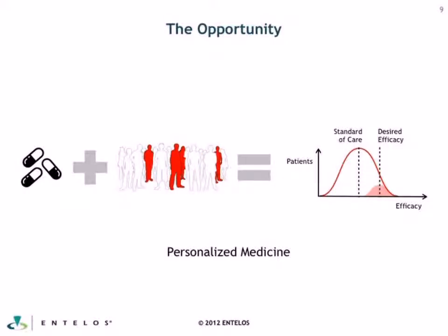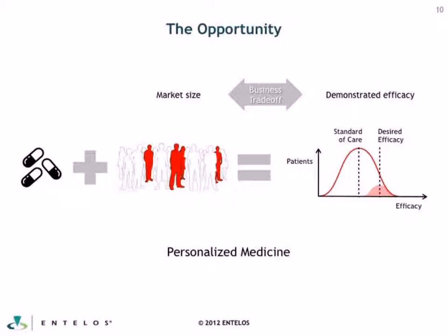Now, clearly, as you look at biasing your trial toward responder subpopulations, there is a business tradeoff between market size and demonstrated efficacy. Our job is not to decide that tradeoff for you, but rather to inform you on what that tradeoff may be so that from a business perspective, our customers can make that decision themselves. There's the opportunity to turn a drug that would be a me-too, or wouldn't even be approved, into something that is approved for an admittedly smaller market.